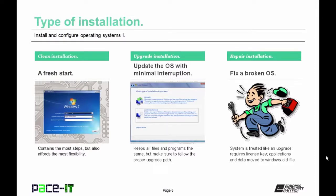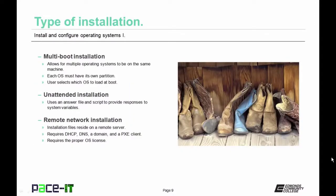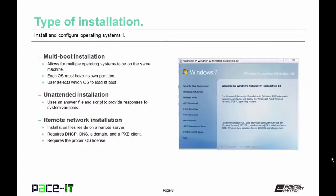The multi-boot installation allows multiple operating systems to reside on the same machine — each OS must have its own partition, and the user selects which to load at boot. An unattended installation uses a special script file to provide responses to system variables. The remote network installation has installation files residing on a remote server and requires a DHCP server, a DNS server, a domain, and a PXE (pre-execution environment) client, as well as the proper operating system license.